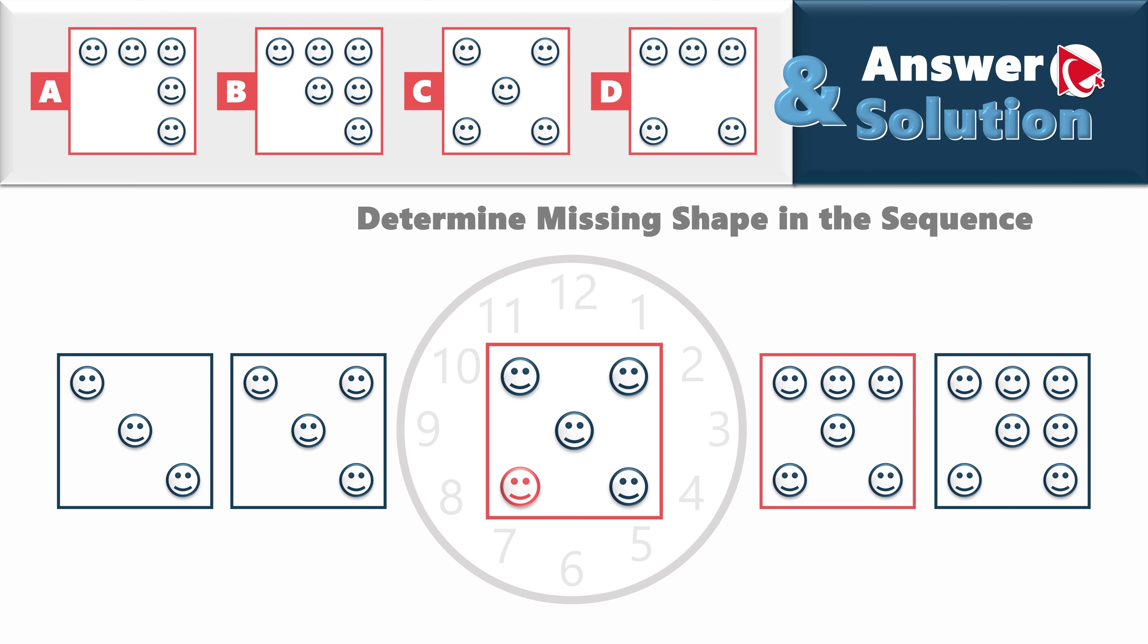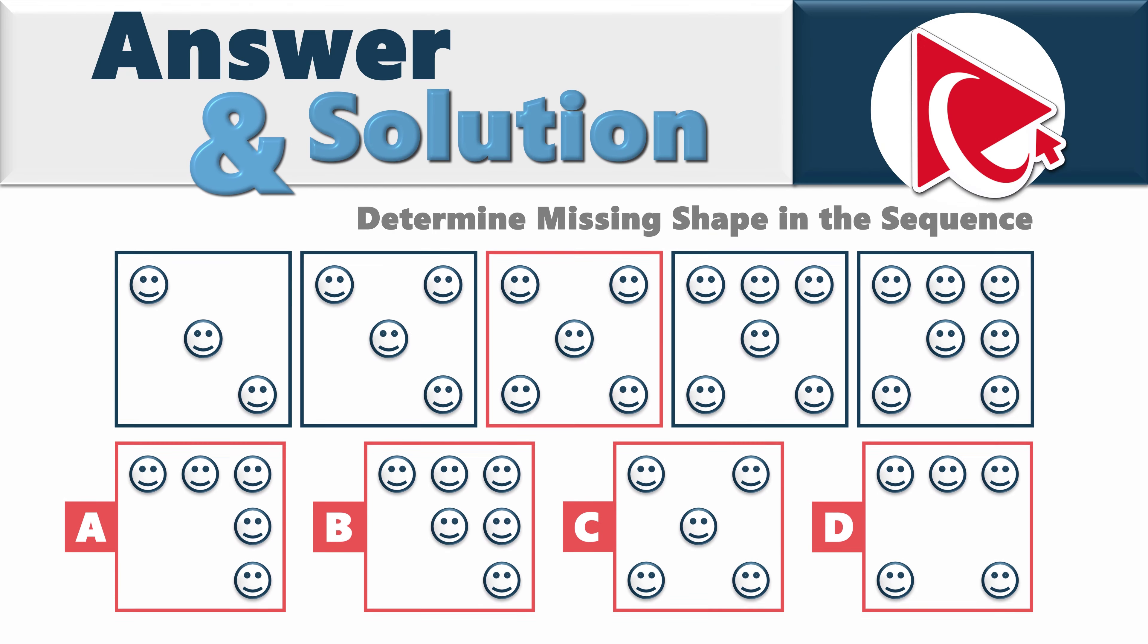Then, in shape 4, the new shape shows up at 12 o'clock. Then, the next one in shape 5 would be at 3 o'clock. And if we want to continue the pattern, the following shape, if there would be a shape 6, the smiley face would be at 6 o'clock. Which means that the new smiley face will show up at 7 o'clock in shape 3. And which also means that the correct answer here is choice C.